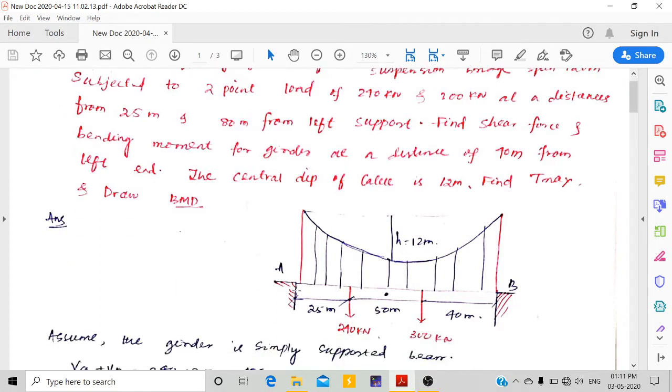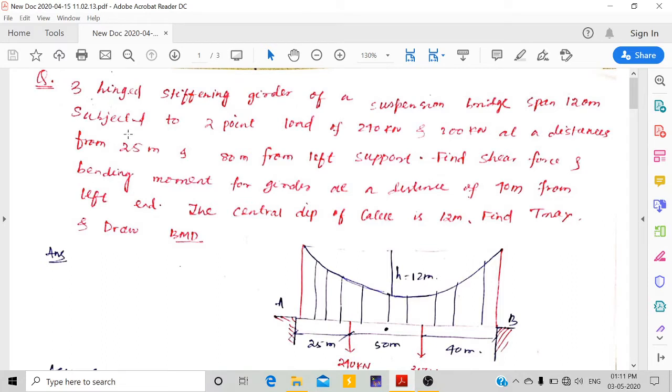Here we can see it is 3-hinged because A is simply supported, B is simply supported, but the internal hinge is making it a determinate structure. So it is 3-hinged.